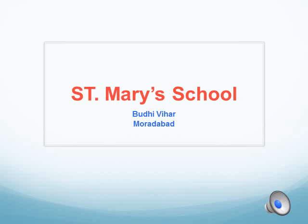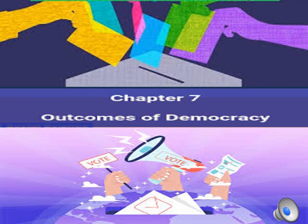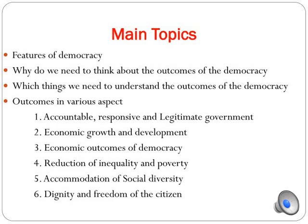Hello students, this is Taranam Jahan and I'm here to start a new chapter from your political science. Chapter 7 is the Outcome of Democracy for Class 10th from your civics. The main topics we are going to discuss are the features of democracy, why we need to think about the outcome of democracy, and outcomes in various aspects like accountable, responsive and legitimate government, economic growth and development, reduction of inequality and poverty, accommodation of social diversity, and dignity and freedom of citizens.